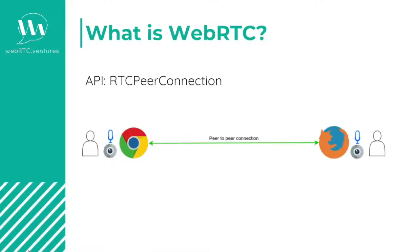The second API is RTC Peer Connections. Once we have users' local media streams, we create an RTC Peer Connections object in order to be able to send them. The connection is made peer-to-peer using the SRTP protocol. This means that media goes straight to the other browser without any storage in the middle, and is also encrypted in transit. This enables security by default.